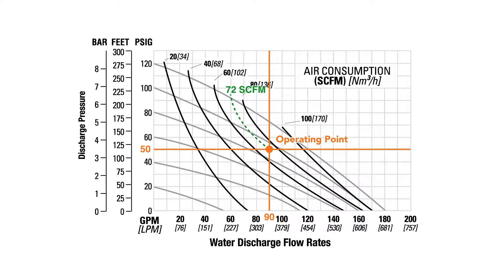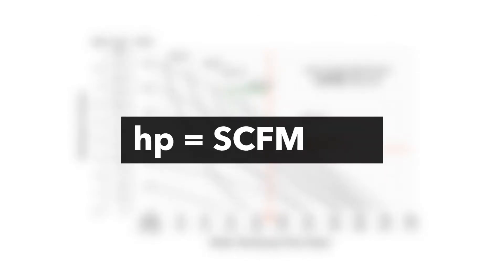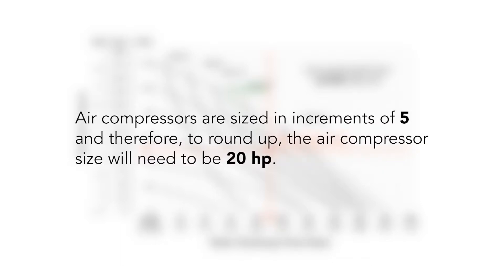To size the air compressor for your system based on the pump's 72 SCFM air consumption, use the formula: HP equals SCFM divided by 4.5. In this example, 72 divided by 4.5 equals 16. Since air compressors are sized in increments of 5, rounding up means the air compressor size will need to be 20 HP.